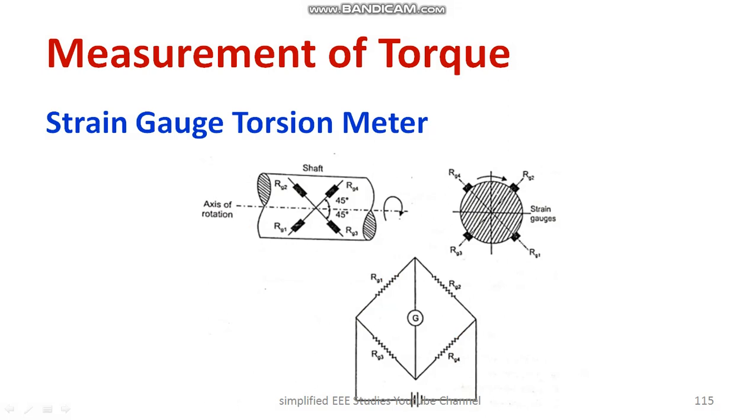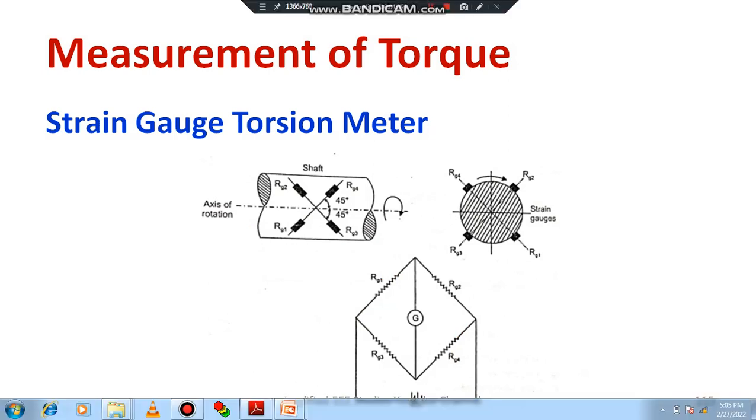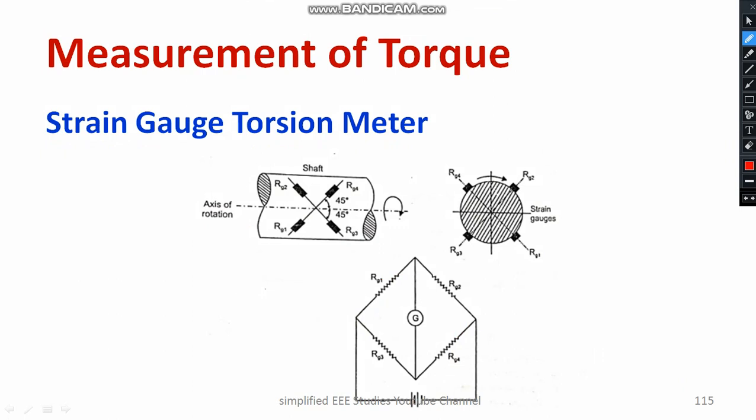Another important method is the strain gauge torsion method. The main components are strain gauges: arms RG1, RG2, RG3, and RG4, all kept at 45 degrees relative to the axis. RG1 and RG2 have almost fixed resistance, but RG3 and RG4 vary with respect to changes in movement.